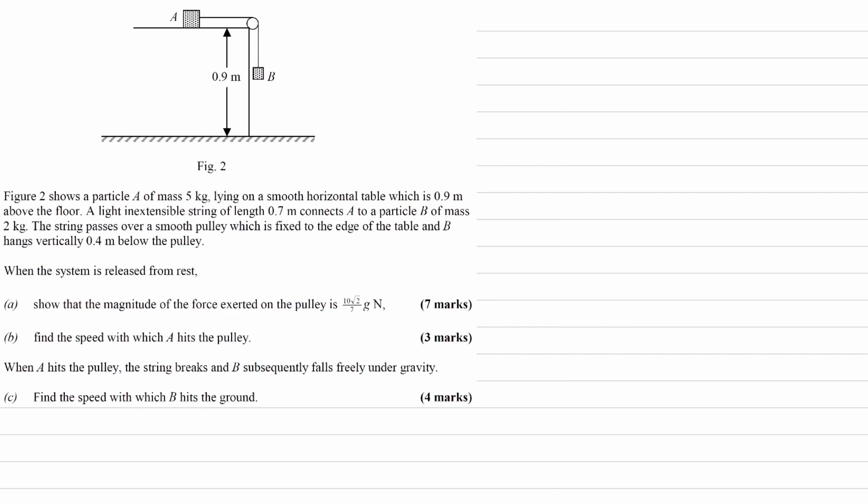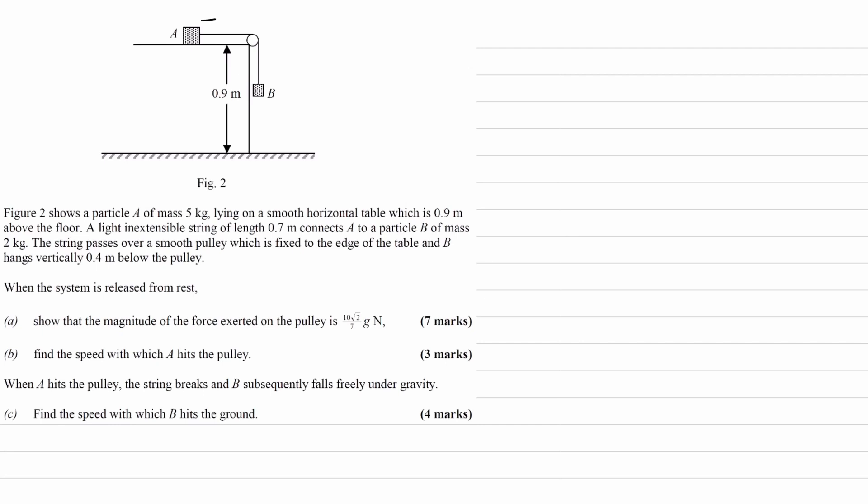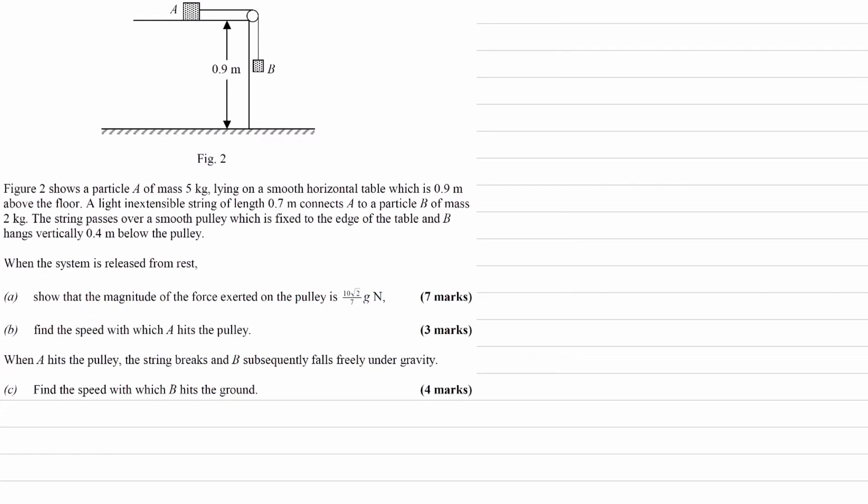We have a particle A of 5 kilograms lying on a smooth horizontal table, so there's no friction. The table is 0.9 meters above the floor, as shown in the diagram. A light, inextensible string of length 0.7 meters connects A to B. B has a mass of 2 kilograms, so I'll draw the force on B, which is 2g.